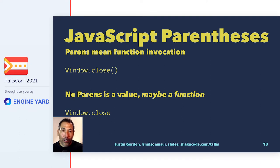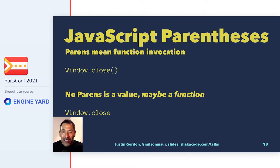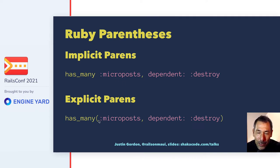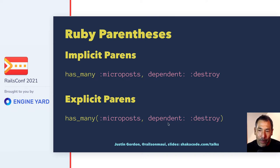How many Ruby on Rails programmers have done some JavaScript and forgotten to put those parentheses? `window.close` without parens is just a value — a reference to the function. With parens, we invoke the function. The key thing is: in Ruby, parentheses are optional. So `has_many :microposts, dependent: :destroy` — once we add those parentheses, this looks like a regular method call. `has_many` takes an argument `:microposts`, and `dependent: :destroy` is a hash.